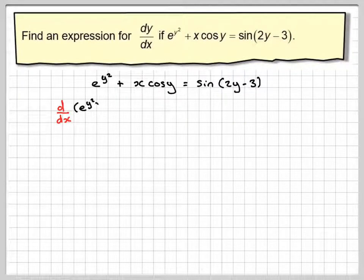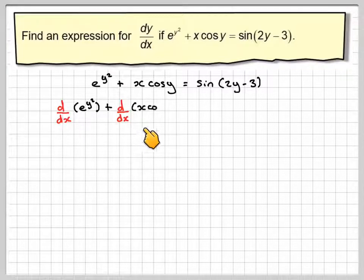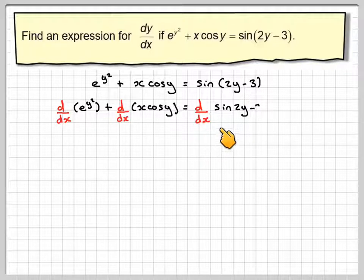So we need to take d/dx of each term. So d/dx of e to the y squared plus d/dx of x cos y must be equal to d/dx of sine of 2y minus 3.